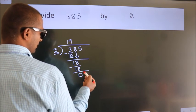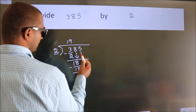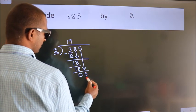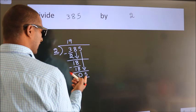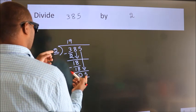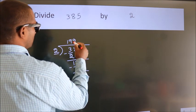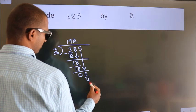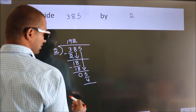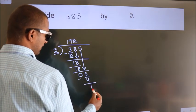After this, bring down the next number. So, 5 down. 5. A number close to 5 in 2 table is 2 2s 4. Now, we subtract. We get 1.